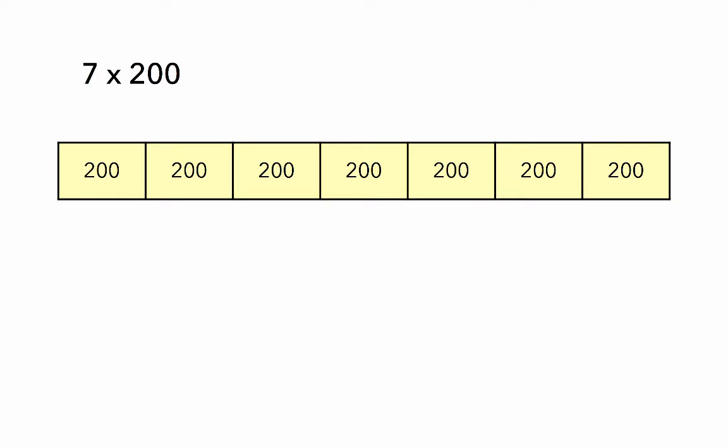Let's look at our equation of 7 times 200. The bar model is already done for us. 7 groups of 200: 1, 2, 3, 4, 5, 6, 7.